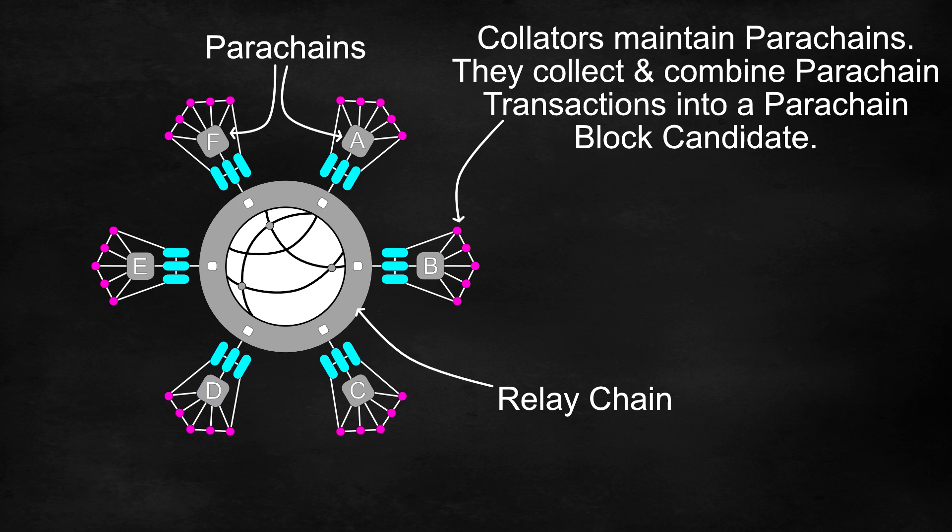A collator is responsible for maintaining parachains. They do this by collecting and combining parachain transactions into a parachain block candidate. This parachain block candidate will contain updates to the transaction history of users on that parachain.